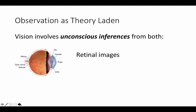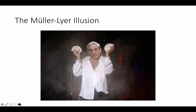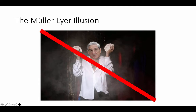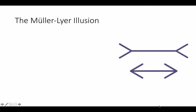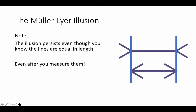Vision involves unconscious inferences from both retinal images and unconscious assumptions about the world. You've probably seen this as well — the famous Mueller-Lyer illusion. These two horizontal lines are the same length. The line at the top and the line at the bottom are the exact same length, but they seem like they are different in length. It seems like the top line is longer than the bottom line, but they're the same length. Even when you know the lines are equal in length, this illusion persists — you can't help but see the two lines as differing in length.